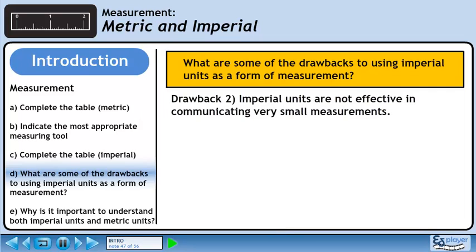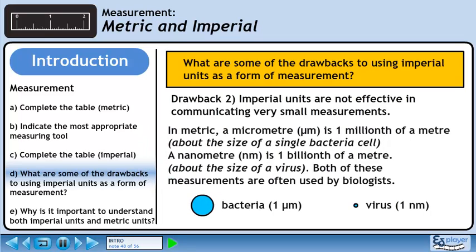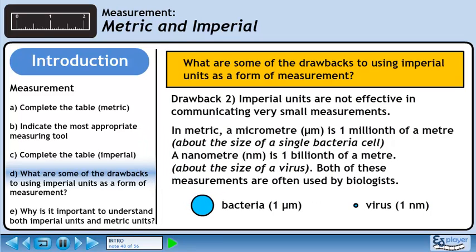Drawback number 2 is that imperial units are not effective in communicating very small measurements. In metric, a micrometer is 1 millionth of a meter, which is about the size of a single bacteria cell. A nanometer is 1 billionth of a meter, which is about the size of a virus. Both of these measurements are often used by biologists.